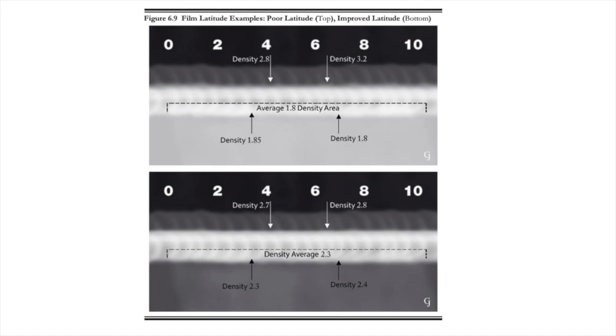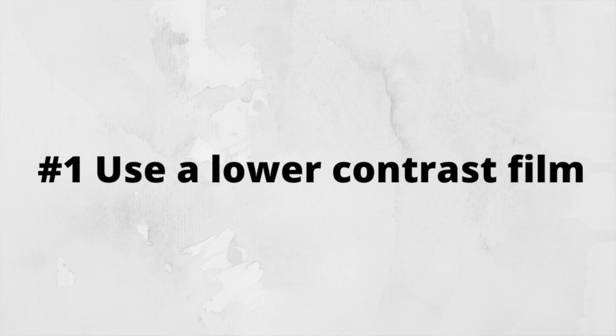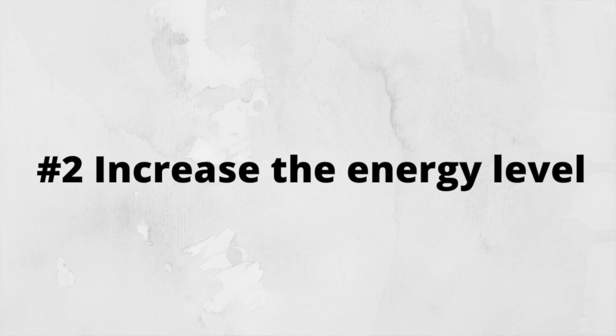Figure 6.9 provides an example of a film with poor latitude on the top, which is improved on the bottom by applying any of the following methods. 1. Use a lower contrast film with a faster speed, upon contractual approval — for example, D5 has more latitude than D3 or D4. 2. Increase the energy level: Iridium provides more latitude than selenium, and a higher kV x-ray will provide greater latitude than a lower kV.